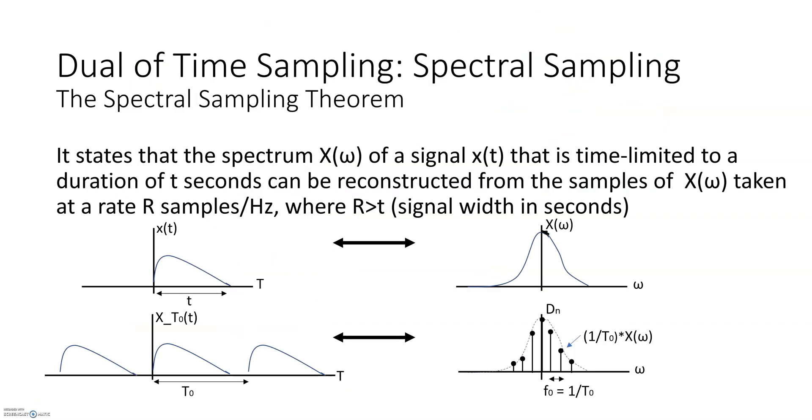Now one other thing that was not covered in the previous video was that all we have discussed so far was the sampling in the time domain. But we can also sample in the frequency domain. So here instead of sampling in the time domain, we sample the spectrum just like it's shown in the diagram here. And then we have a dual of the time sampling theorem called spectral sampling. We'll not go into the details, but I just wanted to put this out there in case you come across it anytime.